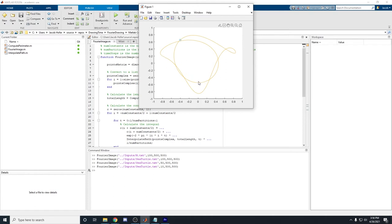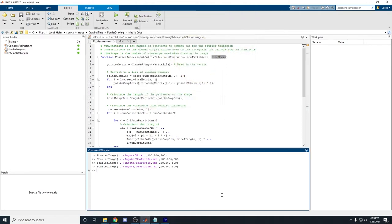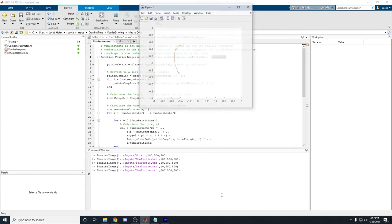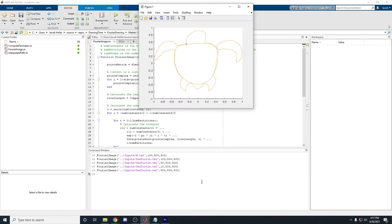We can kind of see there's one fin, there's his tail, there's the other fin, and kind of his head. But overall, this is not a sea turtle. Or we can go the other way and we can increase the number of constants to 500. And as we can see, we get a very, very accurate drawing of what the original one was.